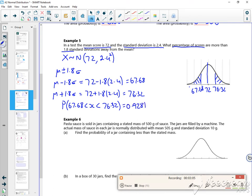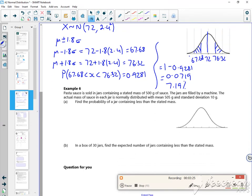Now what I want is the bit outside it. So what I want is 1 minus the 0.9281, which is 0.0719. So roughly 7.19%. Keep an eye on that time. In fact, I might stop the bit there just in case.